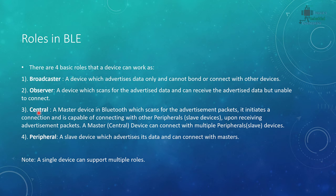In microcontroller terminology, a master controls the communication and a slave connects with the master. In Bluetooth language, the master is the central device and the slave is the peripheral device. A central device scans for advertisement packets, initiates a connection, and can connect with multiple peripheral slave devices simultaneously. However, connecting with more than one slave divides the bandwidth, so keep that in mind.